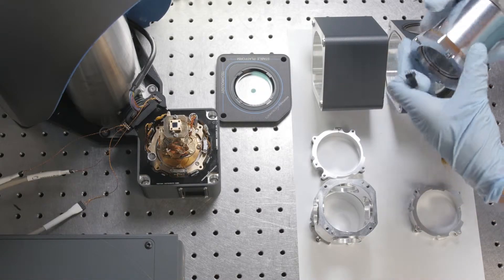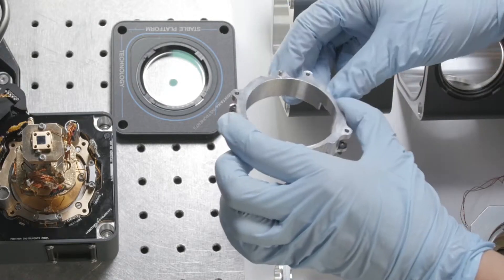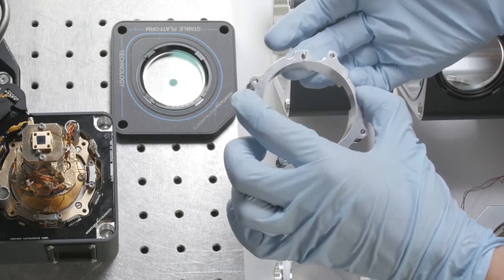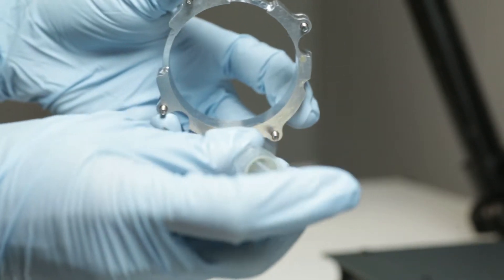Now we're going to install the base radiation shield. You'll want to make sure that there is a thin layer of N-grease between all metal-to-metal components.